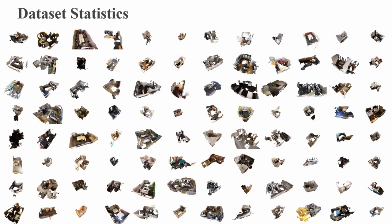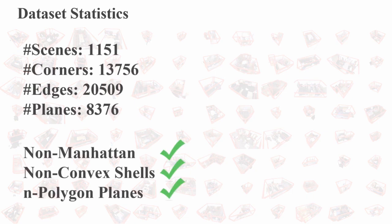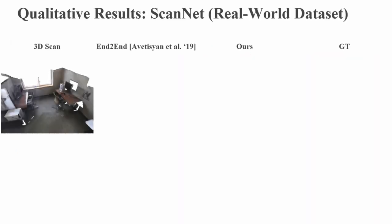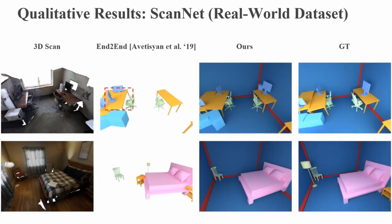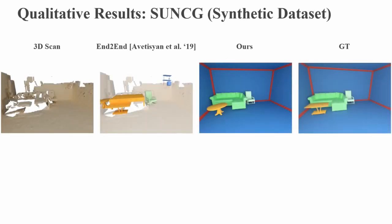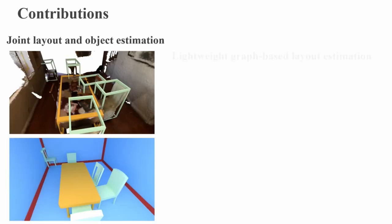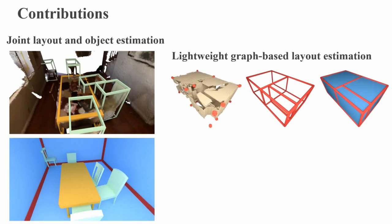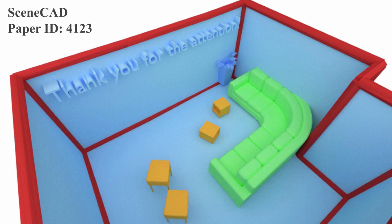To train our approach, we present a richly annotated real-world scene layout dataset. In the CAD alignment task, our approach produces more accurate alignments and provides additional layout estimates. In summary, SceneCAD jointly optimizes for object arrangements and scene layouts in RGB-D scenes. Thank you for watching.